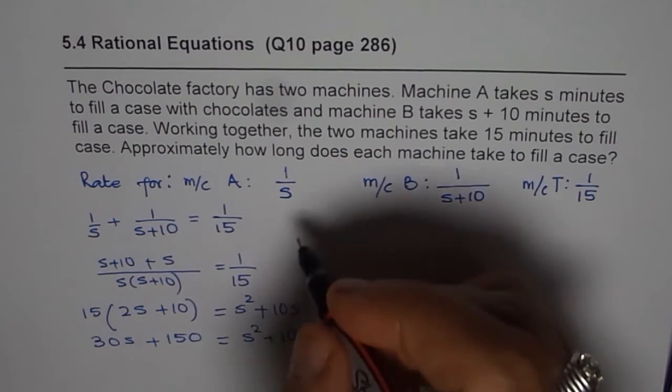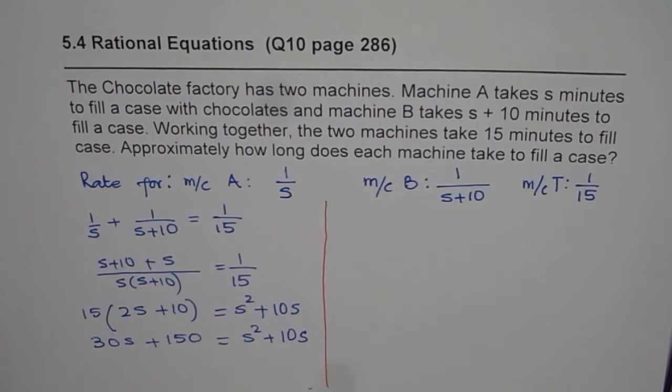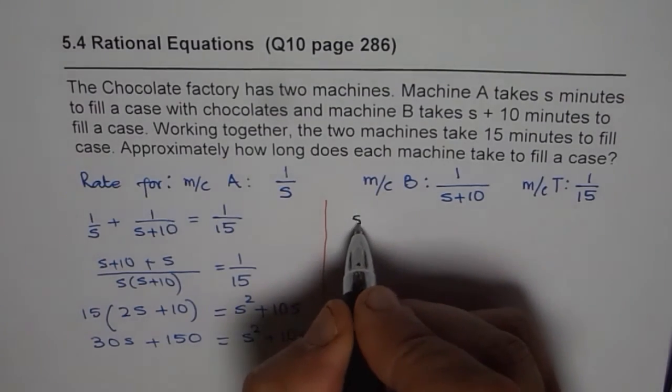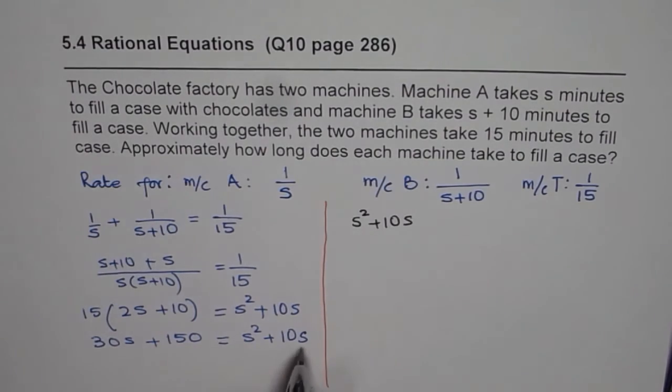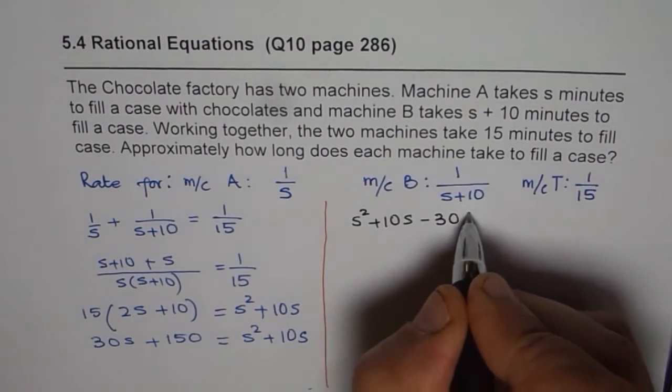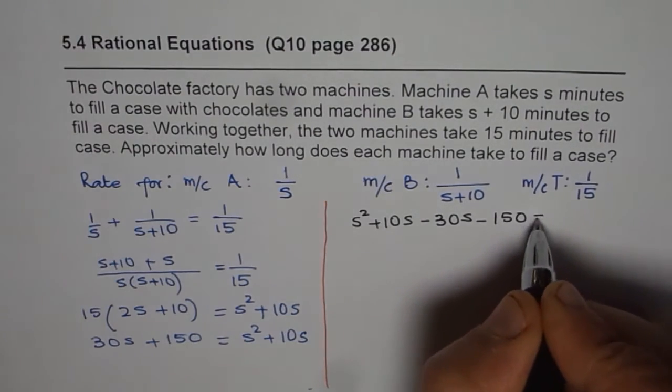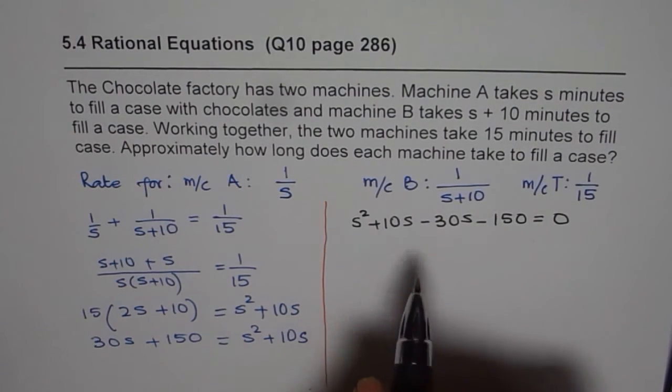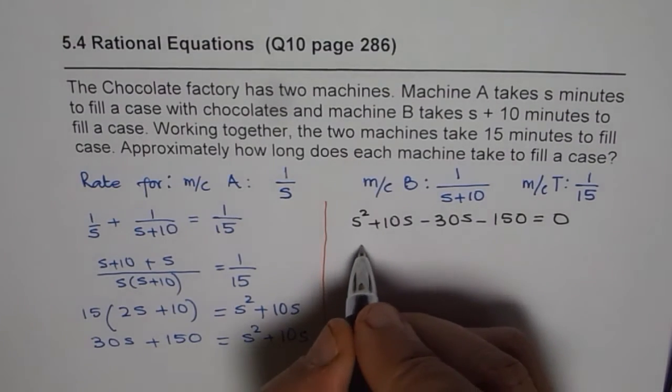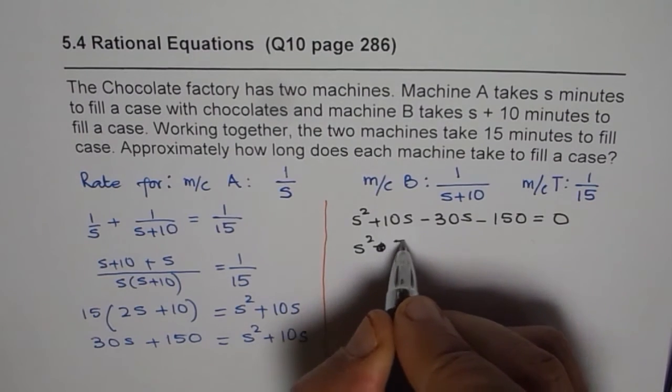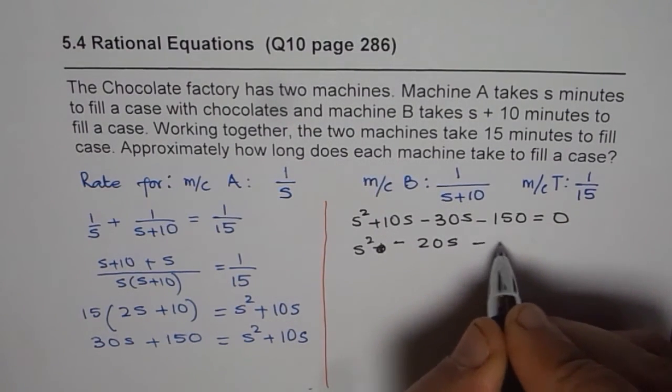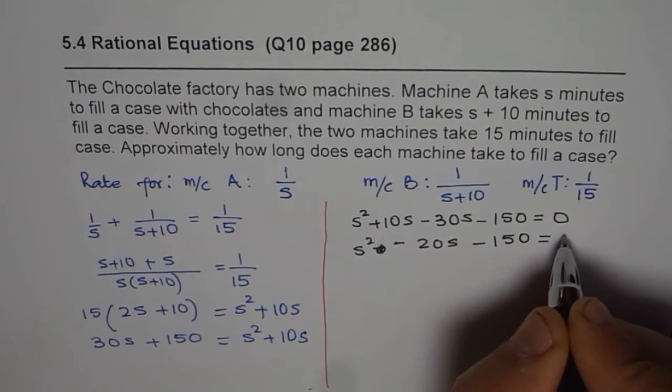So what you get here is a quadratic equation which you can now solve. So let us take all these terms to the right side and then solve them. So we have s squared plus 10s bringing these terms to the right gives us minus 30s minus 150 equals to 0. So let me combine these two terms also. We get s squared plus 20s minus 20s minus 150 equals to 0. Actually s squared minus 20s minus 150 equals to 0.